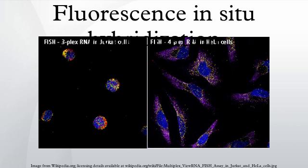Clonal populations of bacteria, each population maintaining a single artificial chromosome, are stored in various laboratories around the world. The artificial chromosomes can be grown, extracted, and labeled in any lab. These fragments are on the order of 100,000 base pairs, and are the basis for most FISH probes.